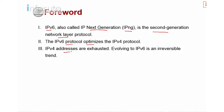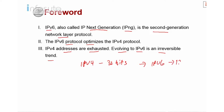IPv4 addresses are exhausted, so we are running out of IPv4 and evolving to IPv6 is an irreversible trend. From IPv4, we have 32-bit. We are moving into the IPv6 era, which is 128-bit. We don't look back — we only look forward. IPv6 is the trend.